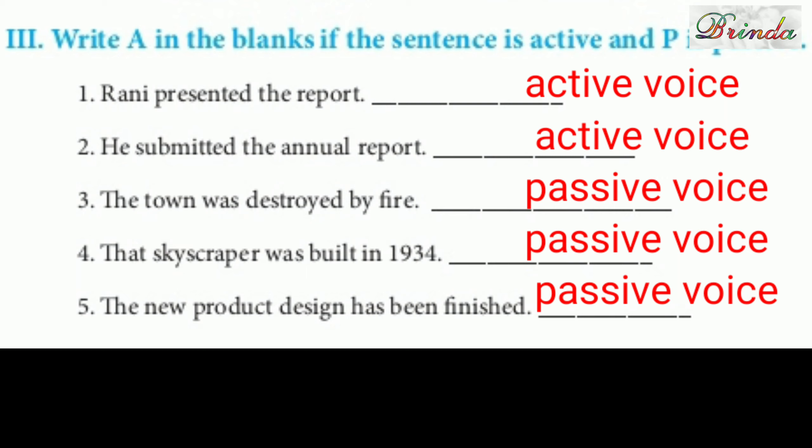Moving on to Roman number three — Write 'A' if the sentence is active voice and 'P' if it is passive voice. 'Rani presented the report' — Rani is the doer, so Active. 'He submitted the annual report' — he is the doer, Active. 'The town was destroyed by fire' — Passive. 'The skyscraper was built in 1934' — no agent identified, Passive. 'The new product design has been finished' — Passive.